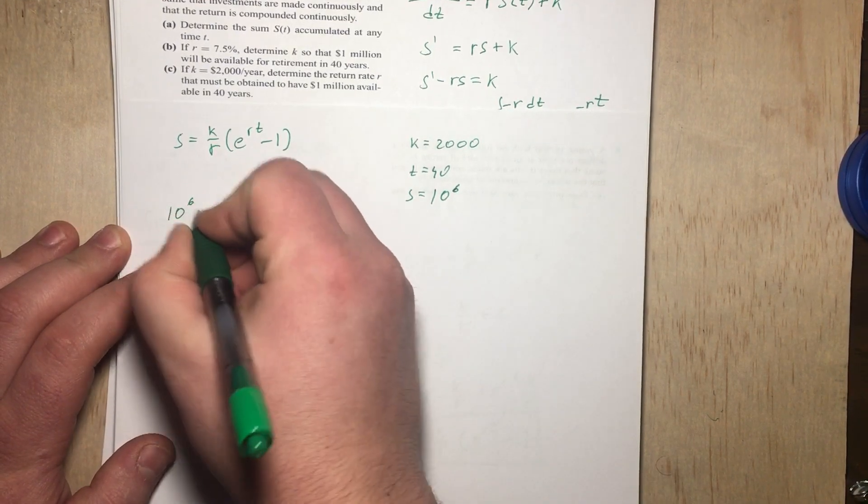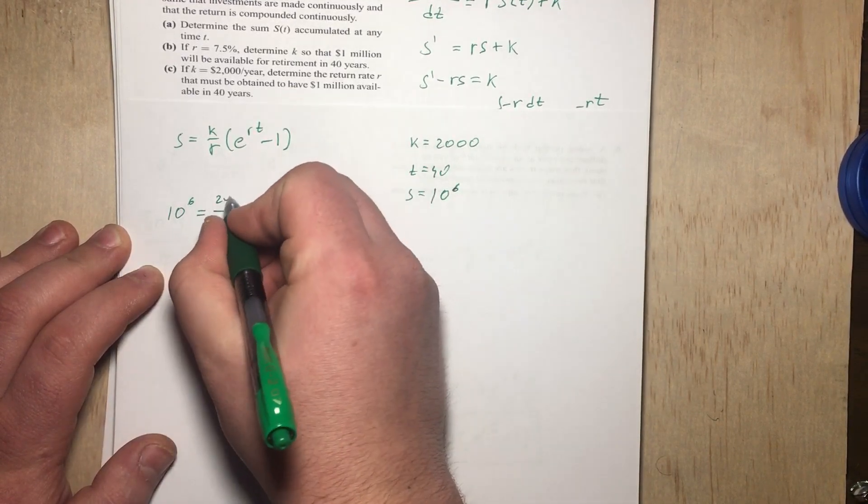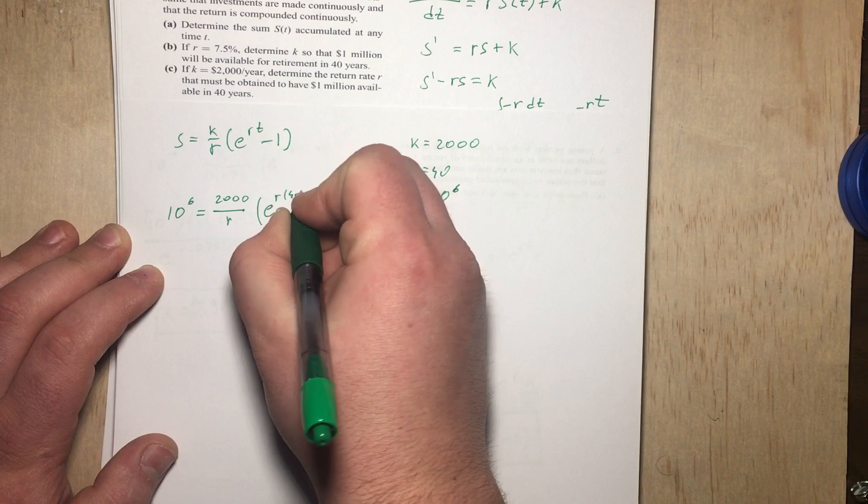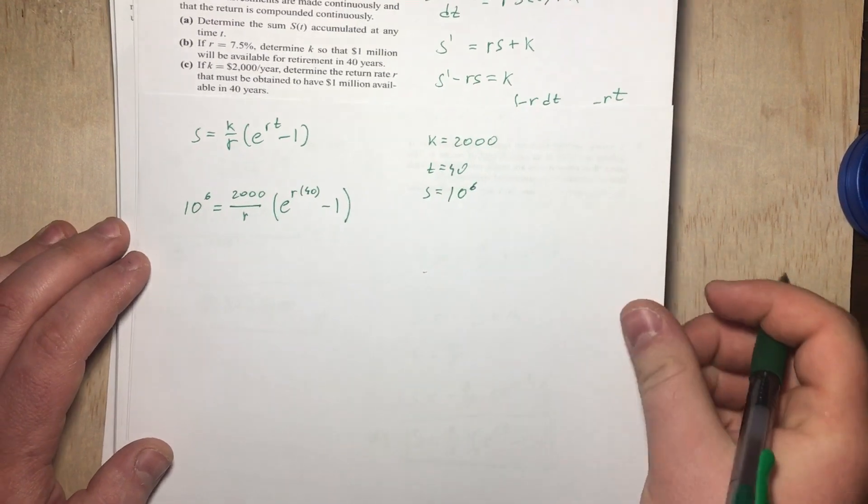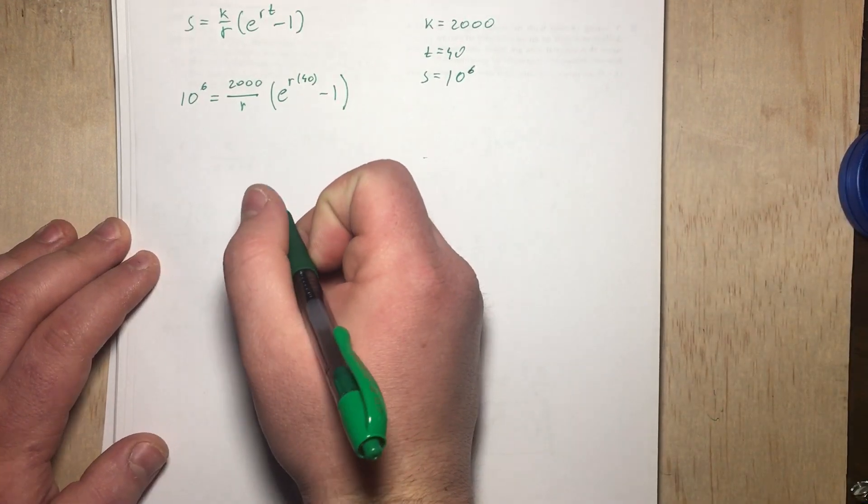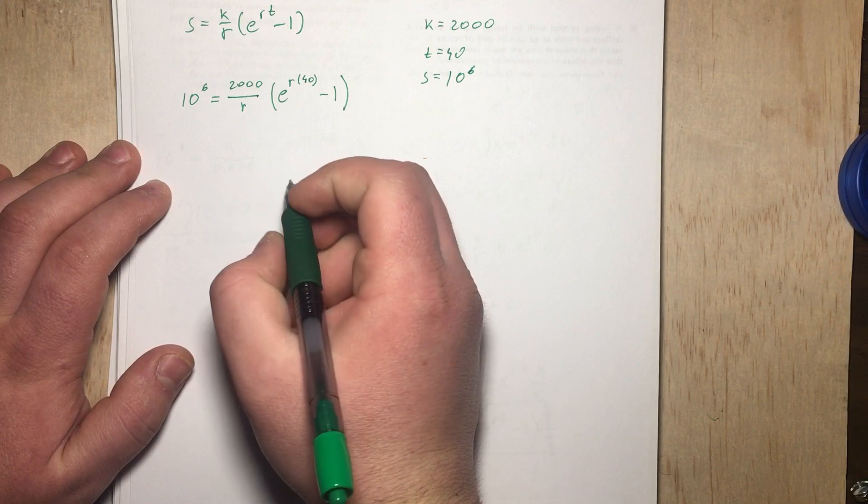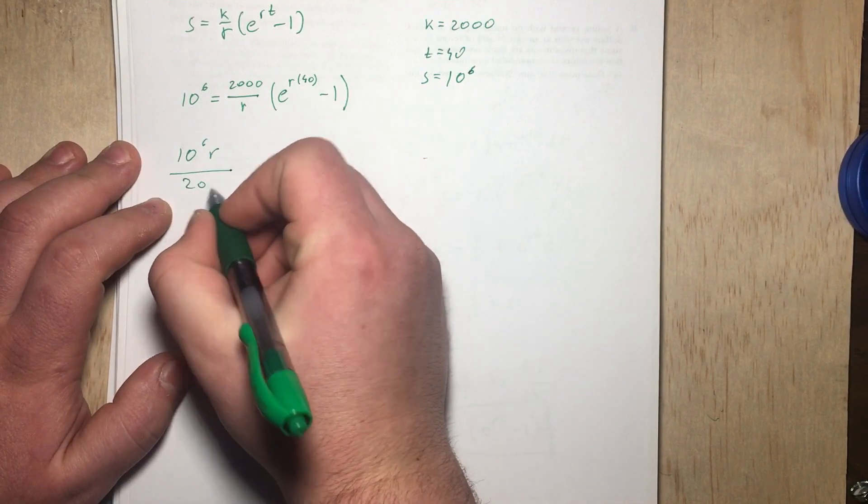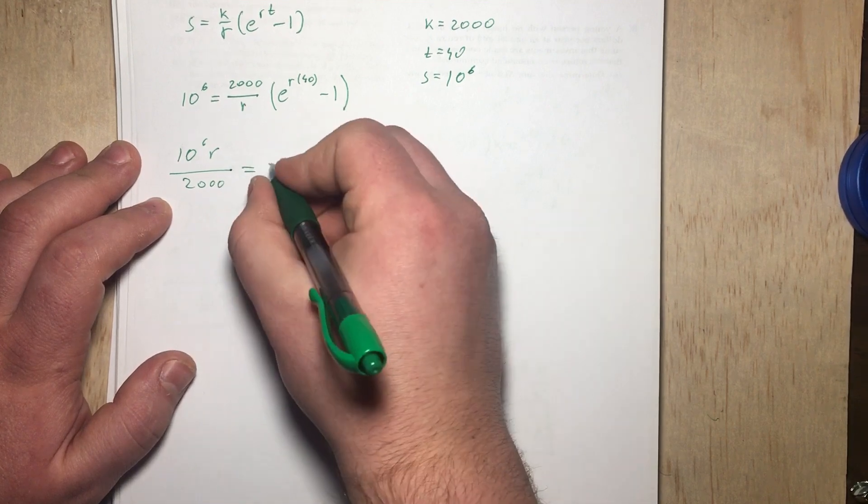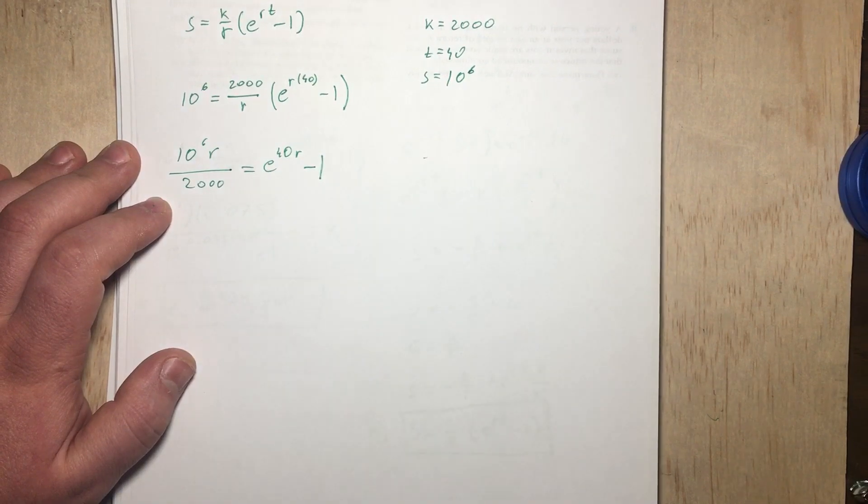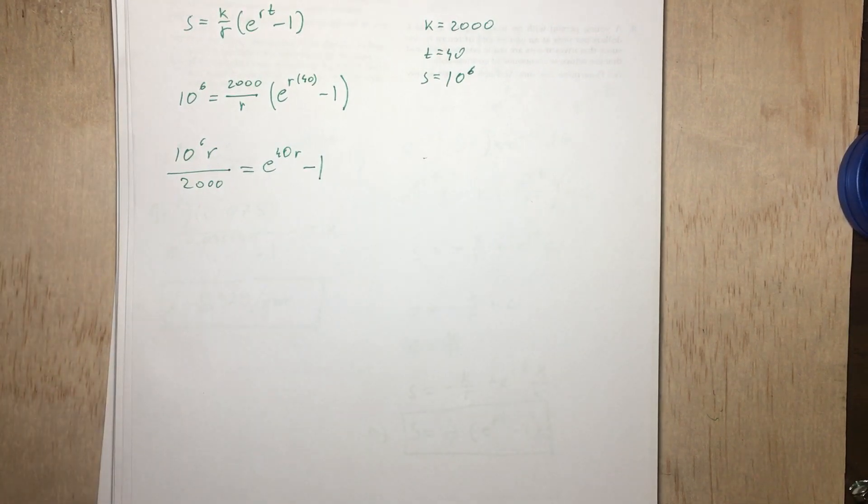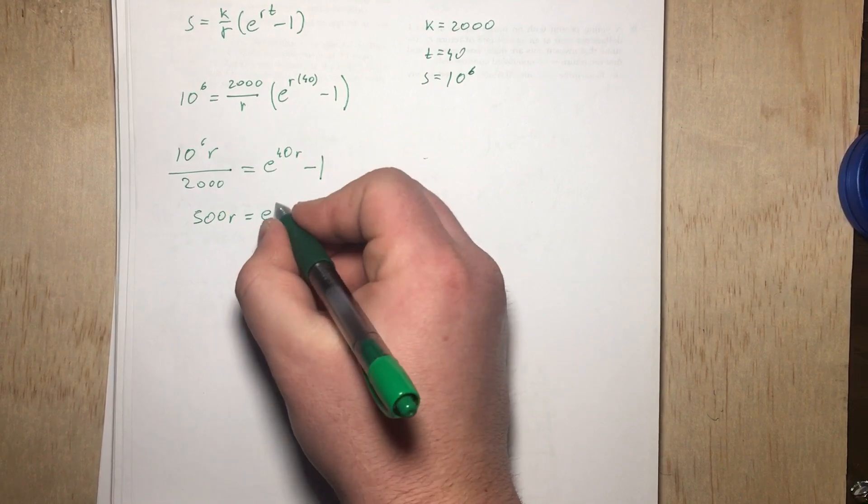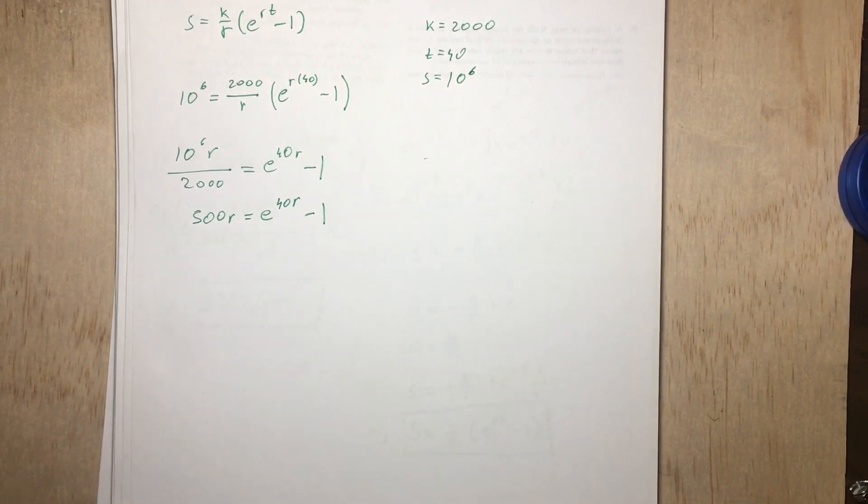So this is a little bit tricky to find. And let's go ahead and see why. So let's plug in S is 10^6 equals 2,000 over R times e^(R times 40) minus 1. So let's go ahead and see what we can do to rewrite this equation. So we can write 10^6 times R divided by 2,000 equals e^(40R) - 1. And let's see, 10^6 divided by 2,000, that is just 500, equals e^(40R) - 1. So how do you solve this problem?